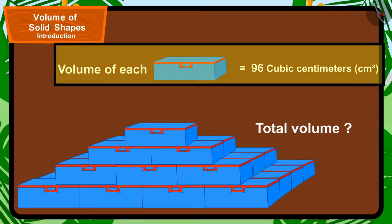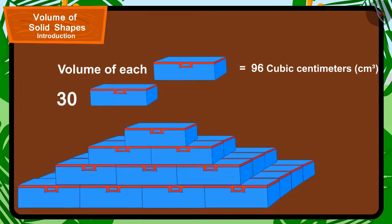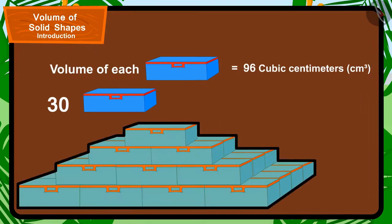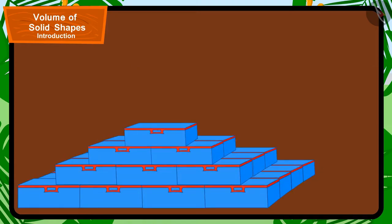The volume of a compass box is equal to 96 cm³ and Babban has used a total of 30 compass boxes in this shape.